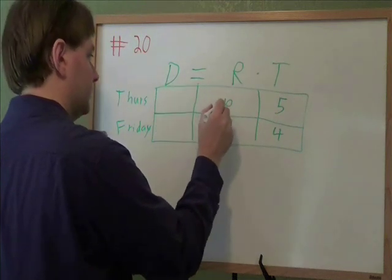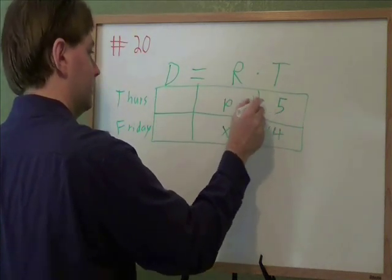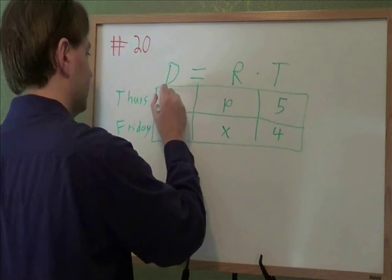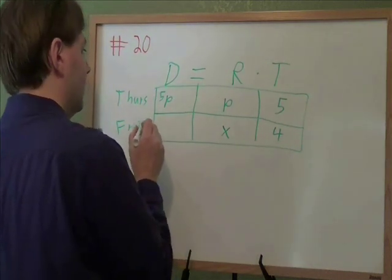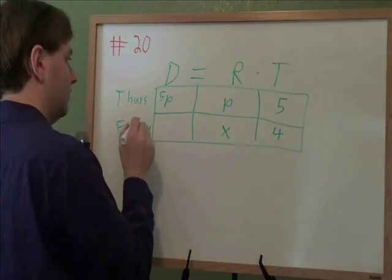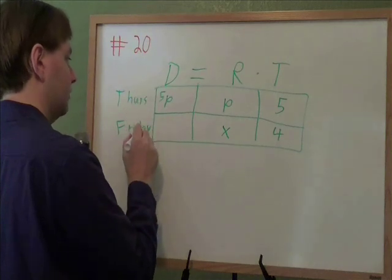And then on Thursday, our distance, distance is rate times time. So p times 5, we had a distance of 5p. And then they also told us that we had the same total number of problems done on Thursday and Friday. So this needs to still be 5p down there.